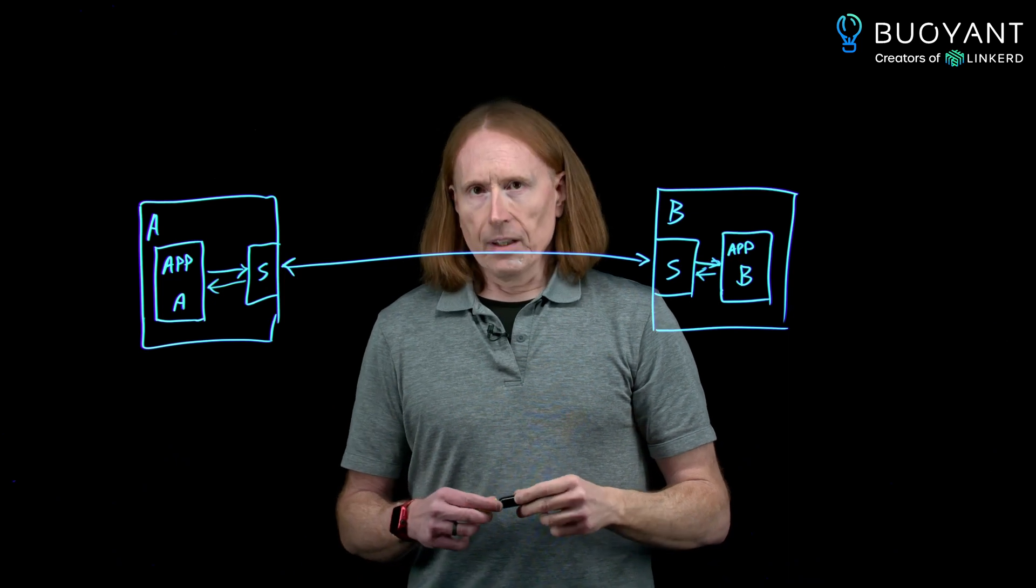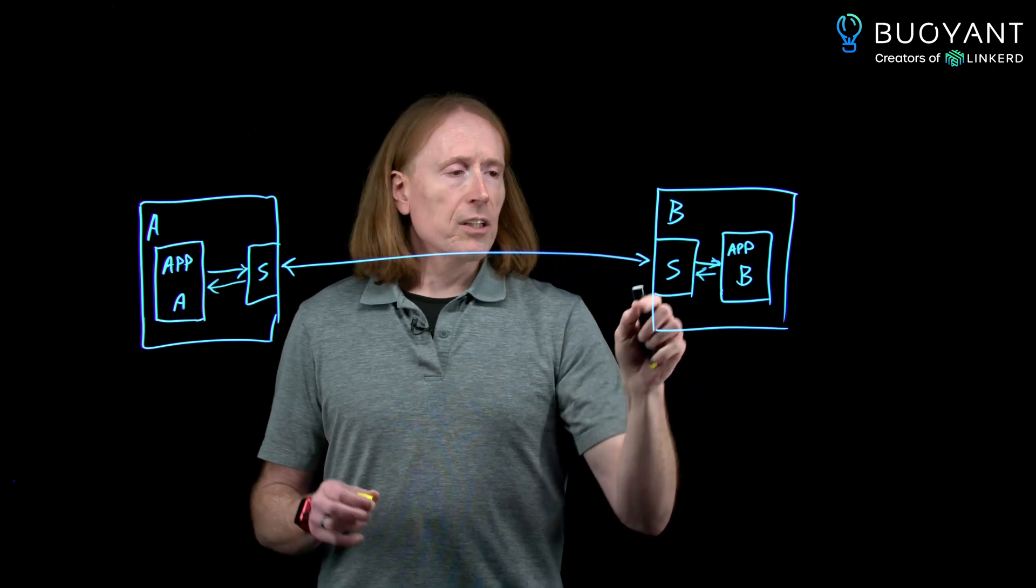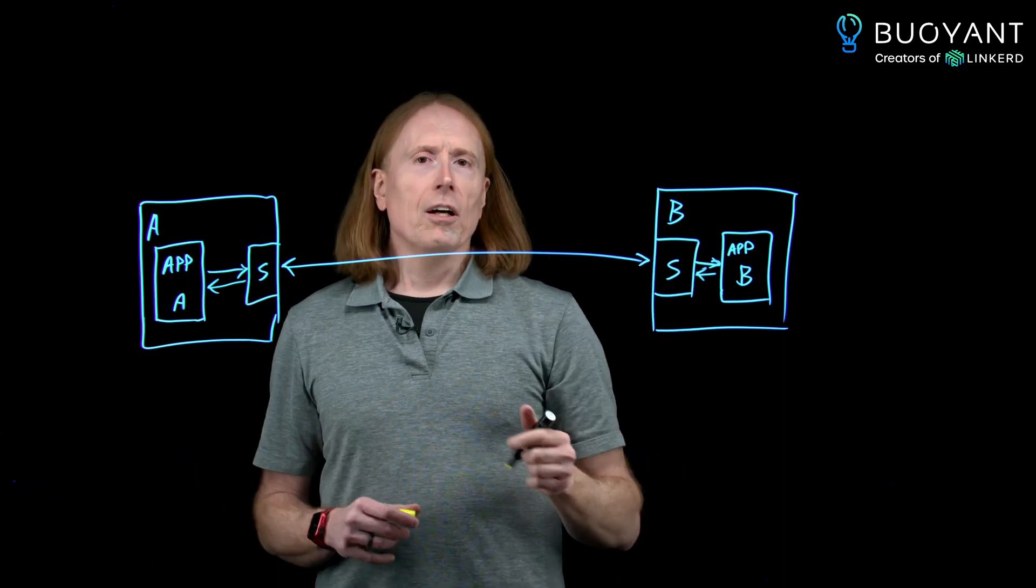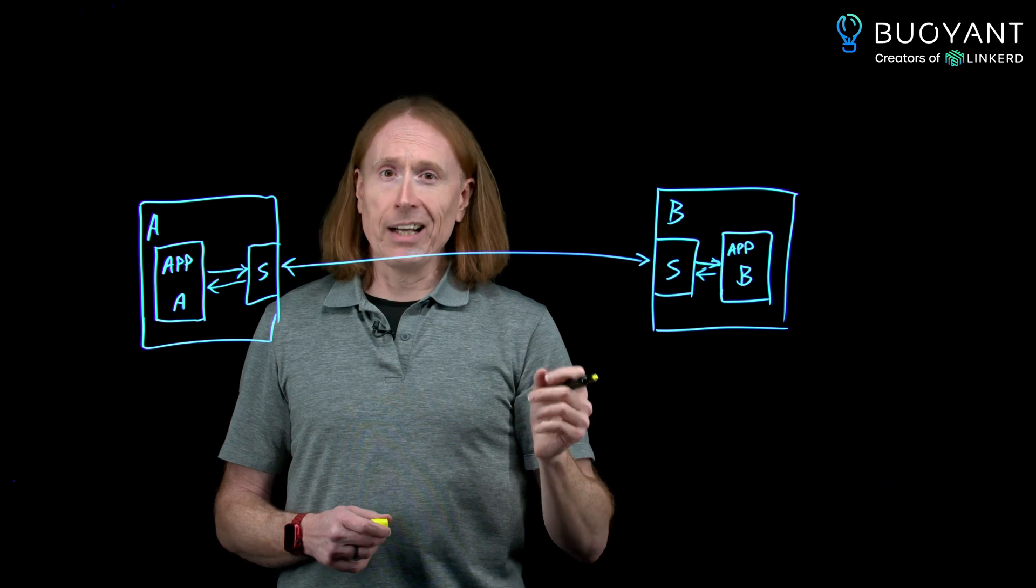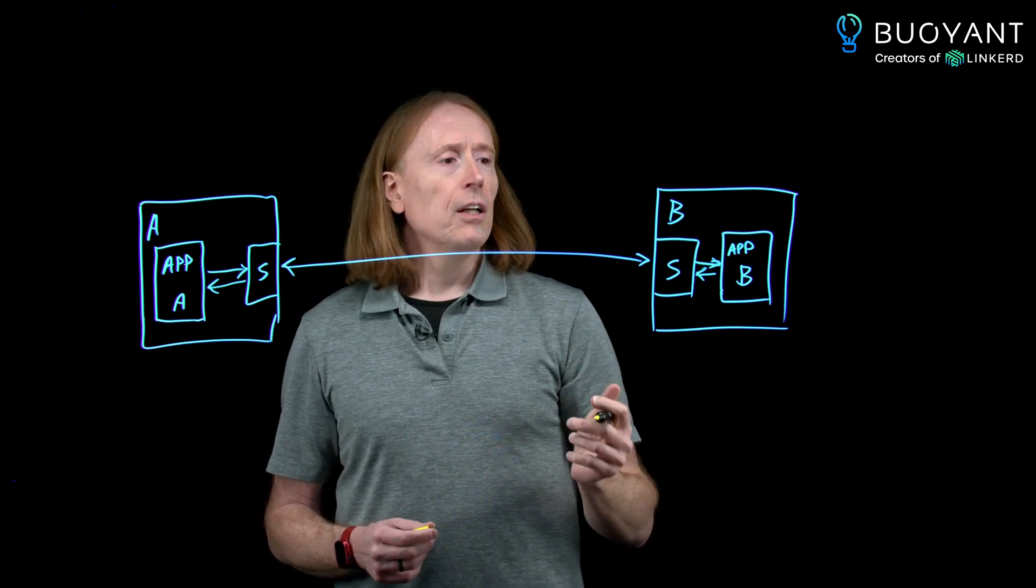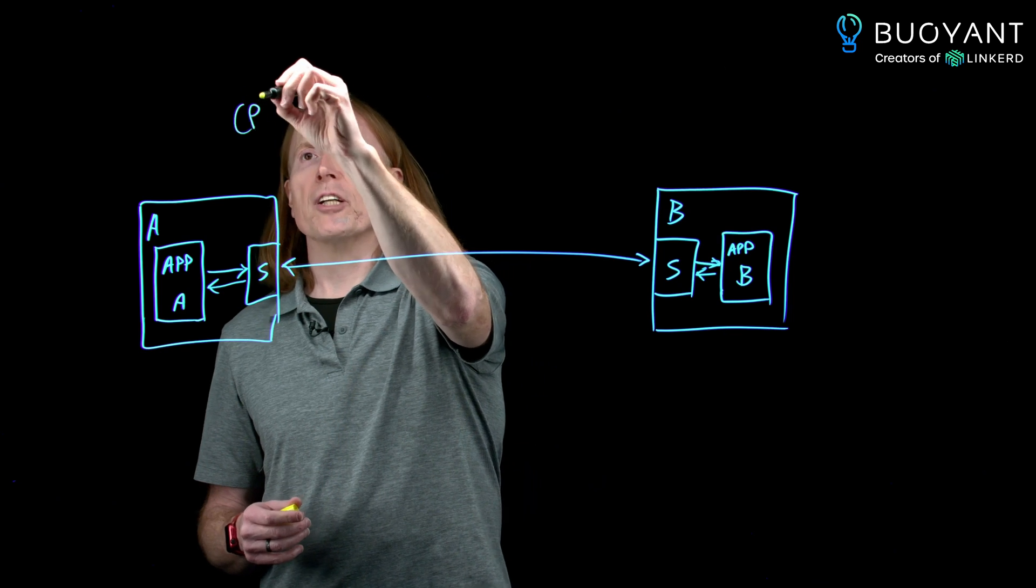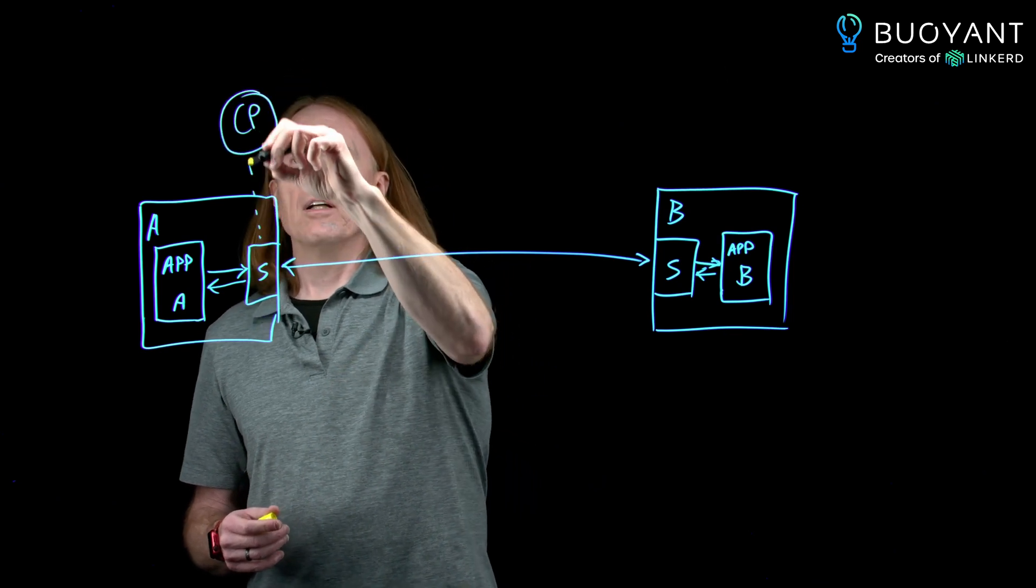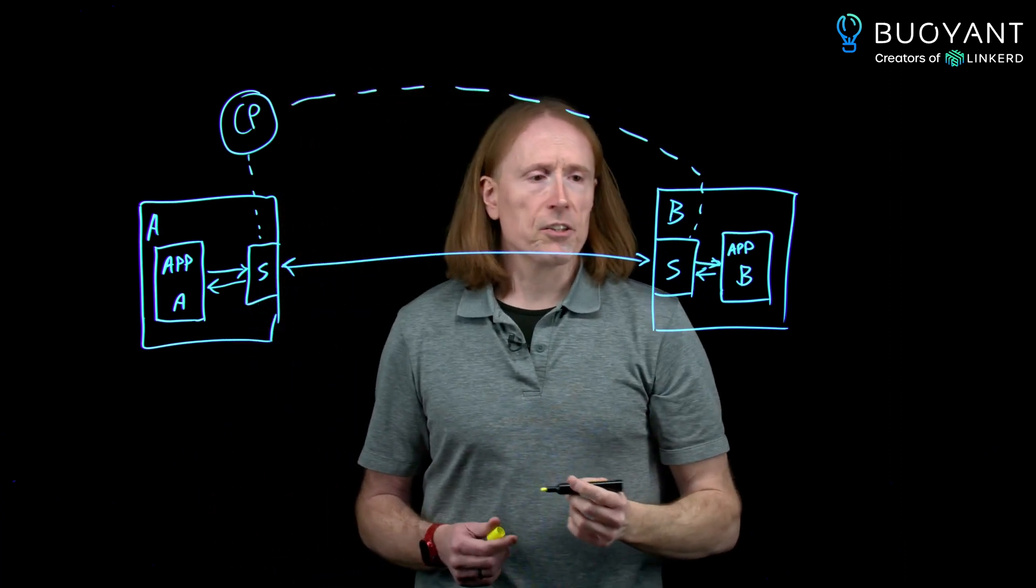So this is actually pretty critical to adding observability because these sidecars, on the one hand, they get to see every request. They know when it starts, when it ends, how many of them happened, how long they took, and they are also always communicating up to the control plane for the mesh itself. So we have this information in some centralized place.